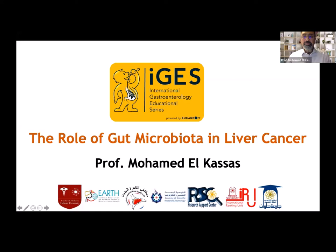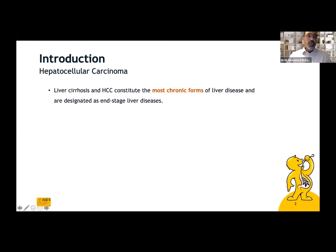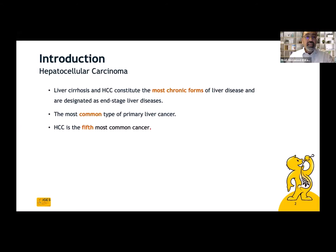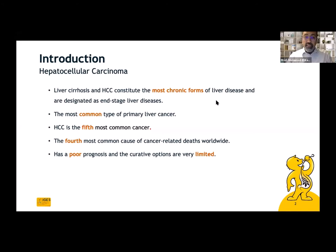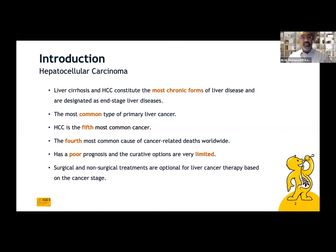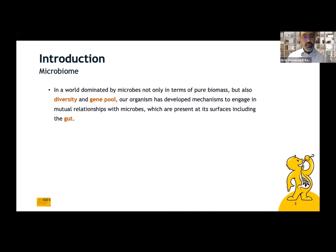The role of gut microbiota in liver cancer: as an introduction, hepatocellular carcinoma and liver cirrhosis constitute the most chronic form of liver disease and are designated as end-stage liver diseases. HCC is the most common type of liver cancer worldwide and the fourth most common cause of cancer-related deaths. It has a poor prognosis and curative options are very limited, varying between surgical and non-surgical treatments based on the stage at which we discover the disease.